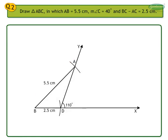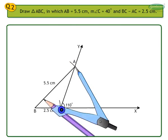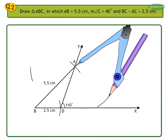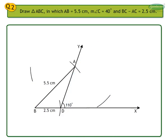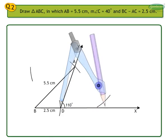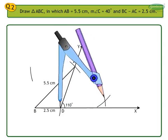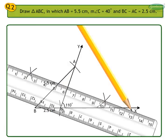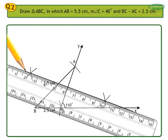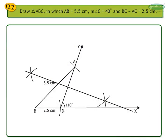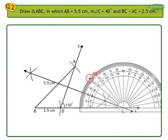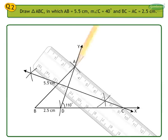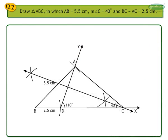With A as center and more than half the length of AD, draw two arcs on the left and right of segment AD. With the same radius and D as center, draw two arcs intersecting the previous arcs. Draw a line passing through the points of intersection of the arcs, intersecting ray BX at point C. Measure angle C — it is 40 degrees. Join A and C. We have constructed the required triangle ABC.